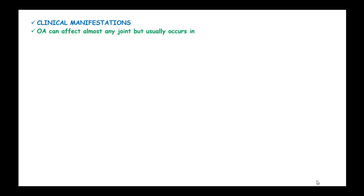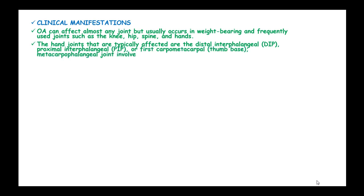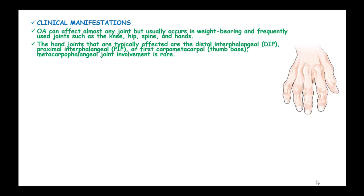Osteoarthritis can affect almost any joint, particularly the weight-bearing and frequently used joints such as the knee, the hip joint, spine, and hands. The typically affected hand joints are the distal interphalangeal joints or DIP, proximal interphalangeal joints, or the first carpometacarpal joint at the thumb base. Metacarpophalangeal joint involvement is rare.